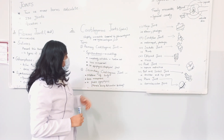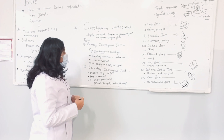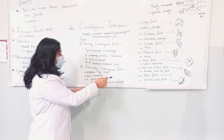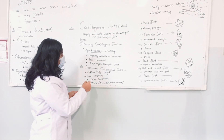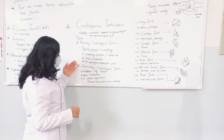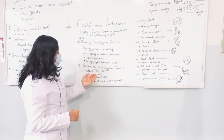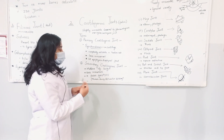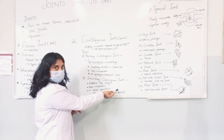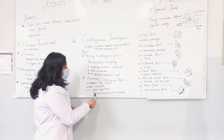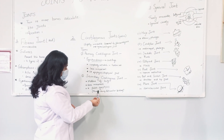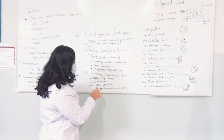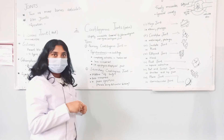The secondary cartilaginous joint is present at the midline of the body and also has less movement. An example is the pubic symphysis, which is the hip bone. It is found in females during parturition and involves the vertebrae.